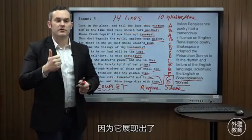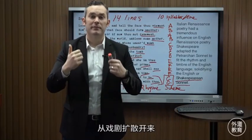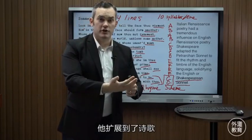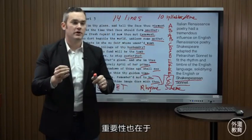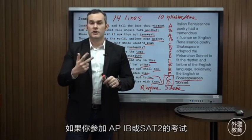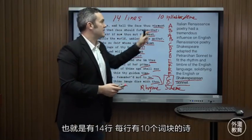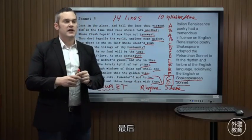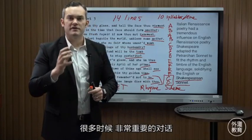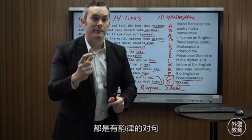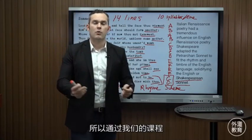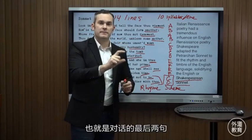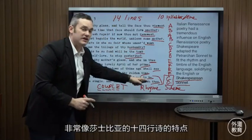The Shakespearean sonnet is important because it shows that Shakespeare's influence in Elizabethan literature extended beyond the plays — beyond Macbeth, Hamlet, King Lear, Othello, The Merchant of Venice, and Romeo and Juliet — into poetry, where he codified one of the most important English poetic forms. For tests like AP, IB, or SAT II, you need to recognize that a sonnet has 14 lines, 10 syllables per line — called iambic pentameter — and ends in a rhyming couplet. In Shakespeare's plays like Macbeth, important speeches often end in a rhyming couplet when Shakespeare wants the audience to pay special attention.